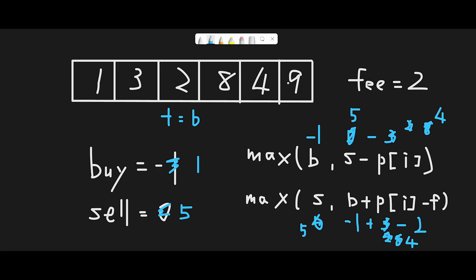On the sixth day (price=9): current buy max profit is 1. For sell: 5 versus 1 + 9 - 2 = 8. So max profit updates to 8. We finish the iteration and return sell profit = 8.